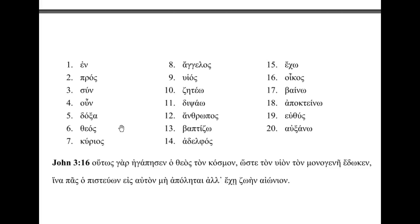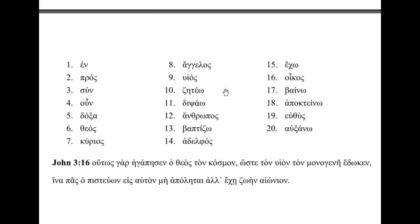Number six: theos. Number seven: kurios. Number eight: angelos — remember, two gammas next to each other have an NG sound, so angelos. Number nine: huios. Number ten: zeteo. Number eleven: dipsao.